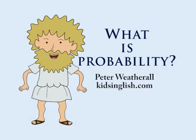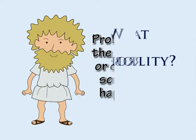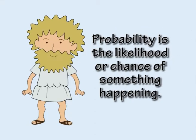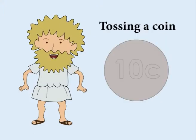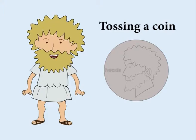What is probability? Probability is the likelihood or chance of something happening. For example, if you toss a coin, there are two possible outcomes. It can land heads or tails up.